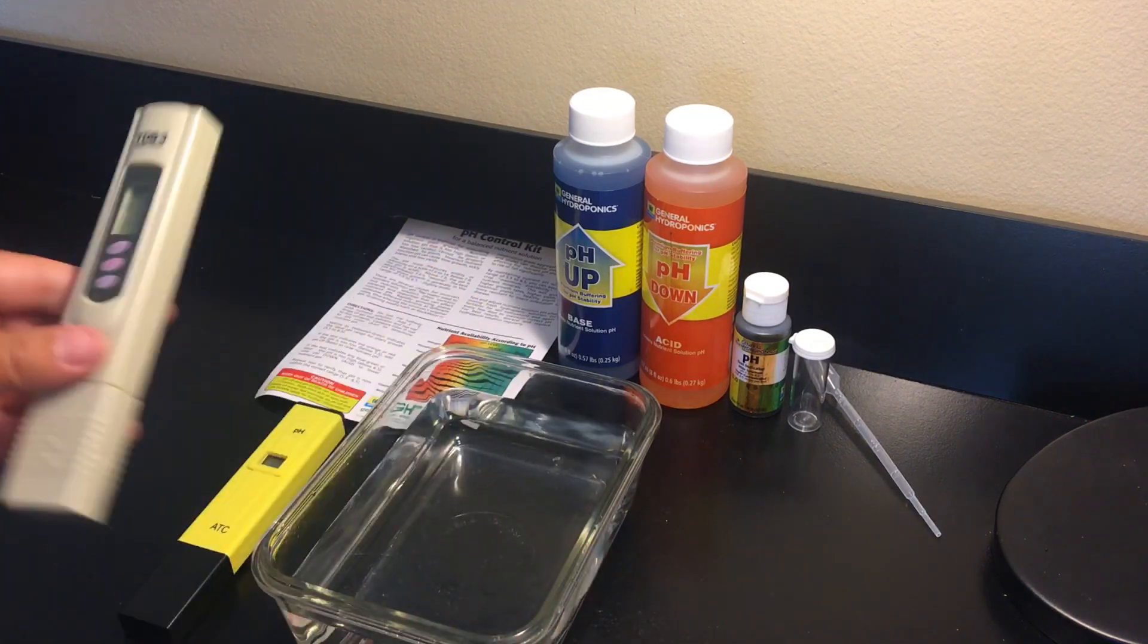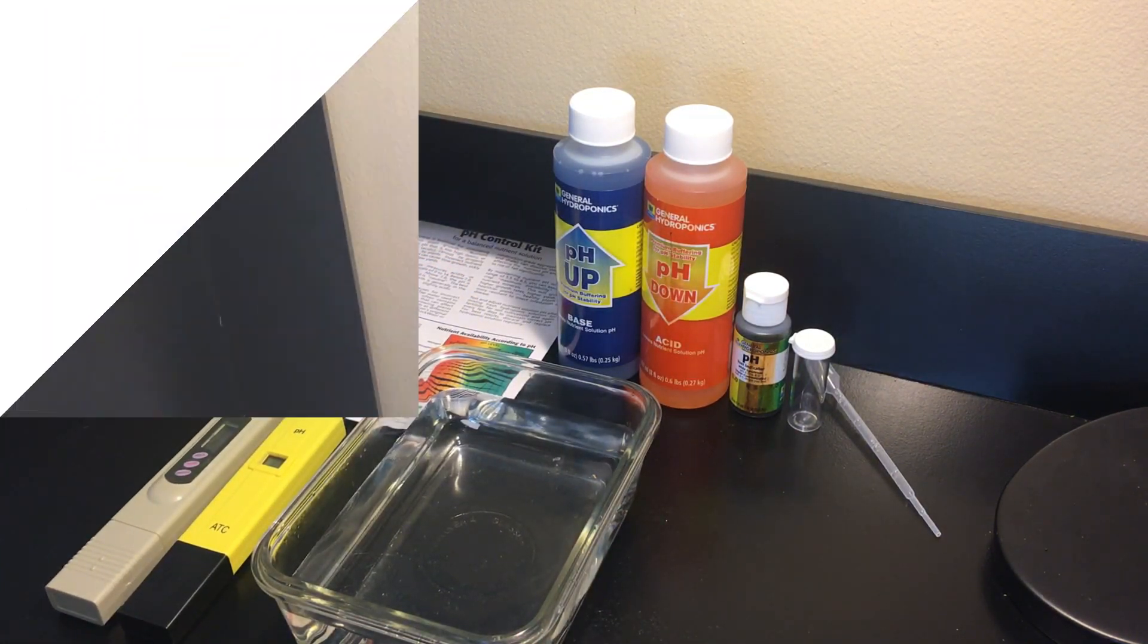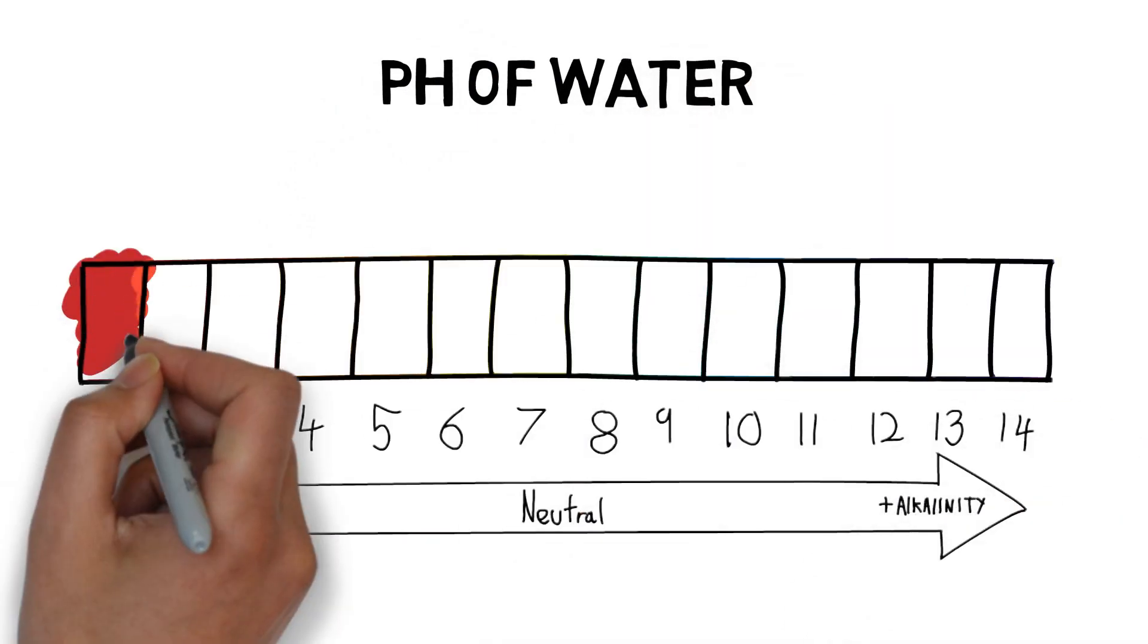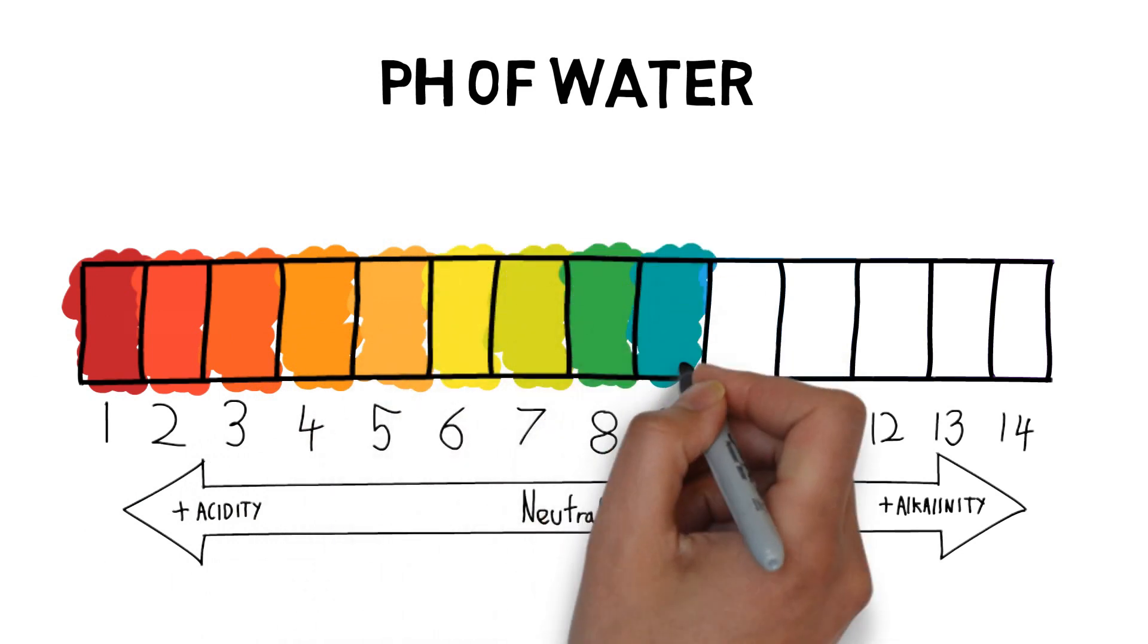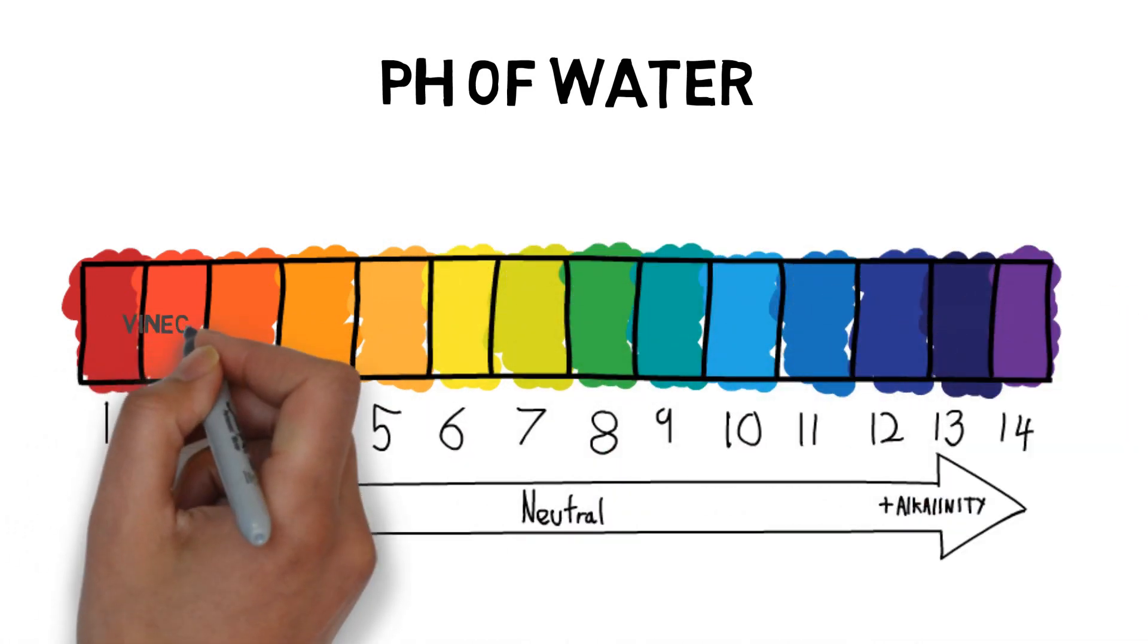Now let's talk about pH. pH is basically how acidic or alkaline the water is, and for a lot of people growing with soil, pH balancing or tap water before watering isn't usually necessary as most tap water is within the acceptable pH range.